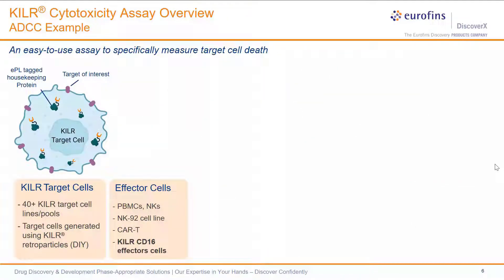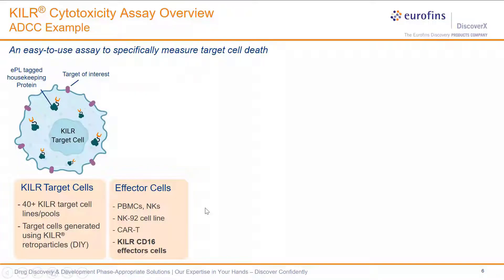The KILR cytotoxicity assay specifically measures target cell death. We engineer the target cell of interest — which either endogenously expresses the target of interest or can be engineered to overexpress a particular target — and introduce our ED-tagged, or EPL-tagged, reporter protein, which is a housekeeping protein well tolerated by every cell type we've worked with. To date, we have over 40 of these cell models stably expressing this reporter in our portfolio, and we've developed a number as custom assays for clients, working with approximately 75 different models so far.